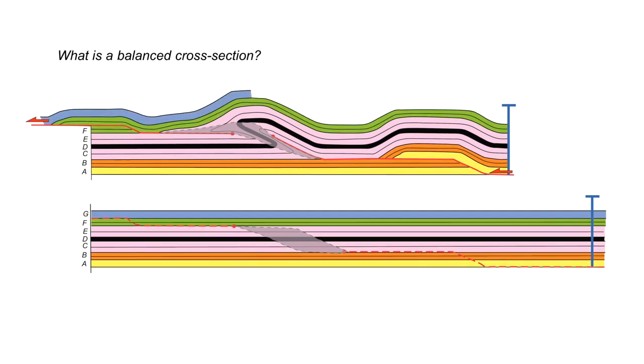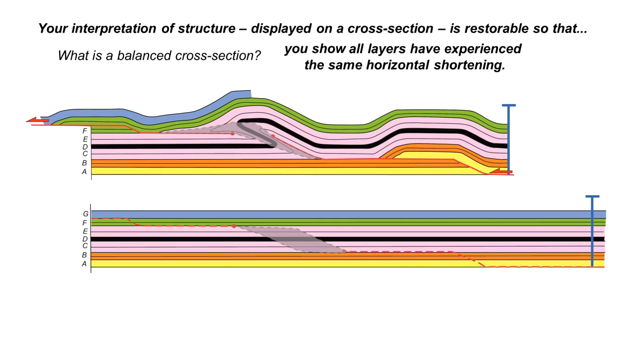So just to emphasize a balanced cross-section is one where all layers have experienced the same horizontal shortening. The balance section is your interpretation of the structure as displayed on the cross-section and it is restorable so that you are able to show that all layers have experienced the same horizontal shortening. In other words you can move from the deformed to the undeformed state through the restoration process. Therefore we need to show both the cross-section and its restored template.